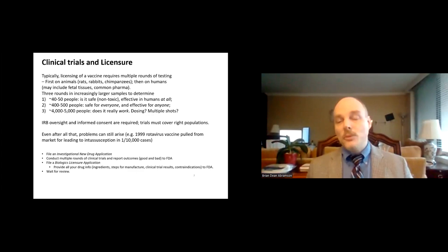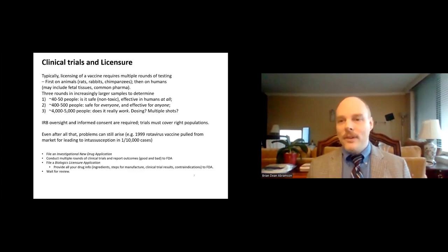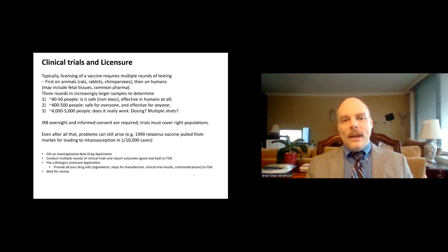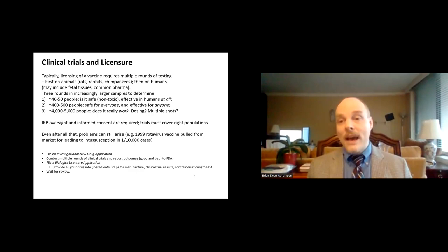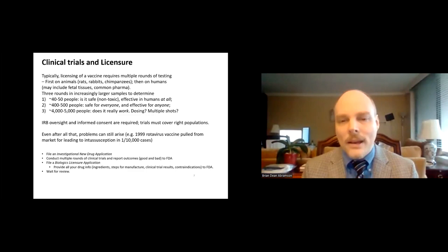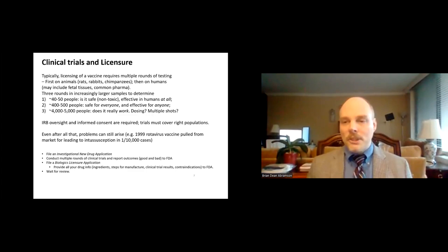Phase 2 involves 400 to 500 people — a larger selection testing different ethnicities, different health conditions, people with particular diseases or infirmities. Then Phase 3 clinical trials have 4,000 to 5,000 people, where we're really refining: Does it work? What are the contraindications to put on a label? What is the precise dosing? Are you going to need multiple shots spread out over some period of time? Clinical trials are conducted in different countries — a lot in Africa, Southeast Asia, South America — because it may be less expensive there.